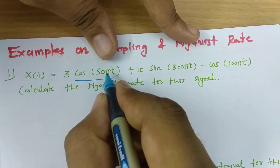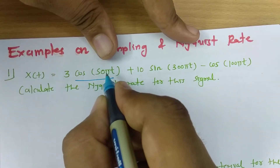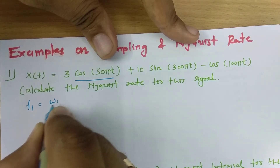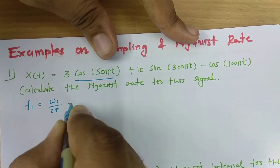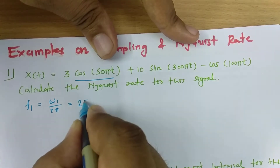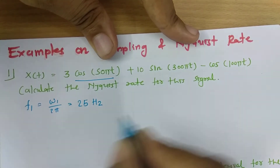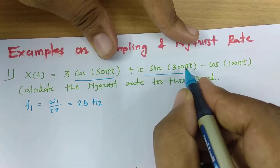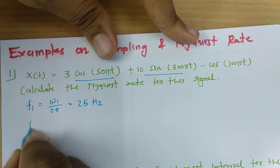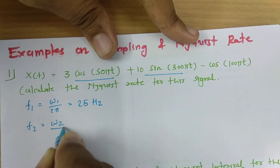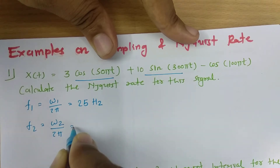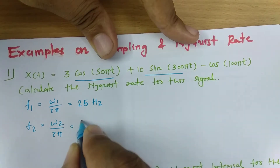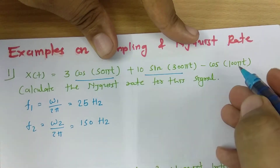From the first component, ω₁ = 50π, so f₁ = ω₁ / 2π = 50π / 2π = 25 Hz. From the second component, ω₂ = 300π, so f₂ = 150 Hz.